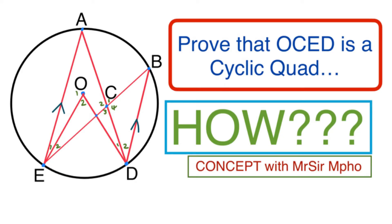You guys voted on the polls and said proving that something is a cyclic quad is quite a challenging concept. I was like, nah, it's not — if you get the concept, you'll see it's not. So let's see.